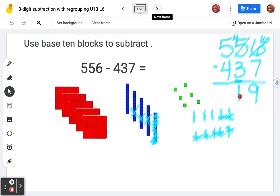Then I move to my hundreds. I have five hundreds, I'm subtracting four. One, two, three, four. How many do I have left? One. 119.